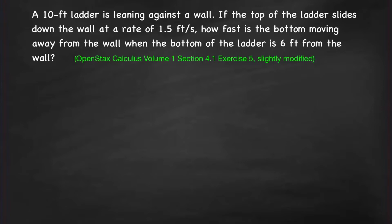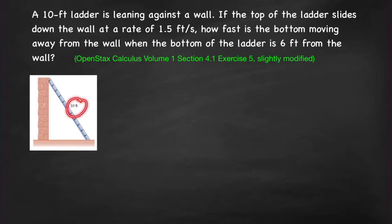First problem: a 10-foot ladder is leaning against a wall. If the top of the ladder slides down the wall at a rate of 1.5 feet per second, how fast is the bottom moving away from the wall when the bottom of the ladder is 6 feet from the wall? The first thing we should do is draw a picture of the problem. Here we have a 10-foot ladder leaning against a wall, and we determine the quantities that depend on time. This distance, which we denote by x, changes as time passes, and the distance of the top of the ladder from the ground also changes. Both variables x and y are functions of time.